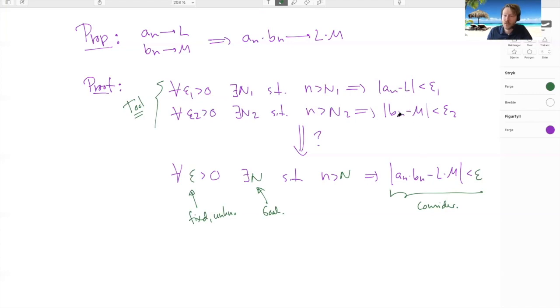There's a nice little trick which I'm now going to give with which you can do this. And the trick is, so if we consider this, we start computing an bn minus l m that we can add by zero in a clever way.